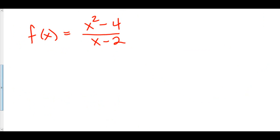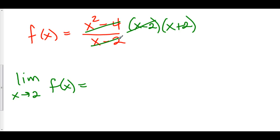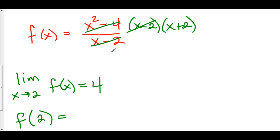Here we have f of x equals x squared minus 4 over x minus 2. If we take the limit as x approaches 2 of f of x, we do some algebra: factor the top as x minus 2 times x plus 2, and the x minus 2's cancel out. So this is just the graph of the line x plus 2 with a hole at x equals 2 — because the factor that caused trouble canceled out. We plug 2 back in and get 4. However, f of 2 does not exist because you can't have 0 in the denominator.